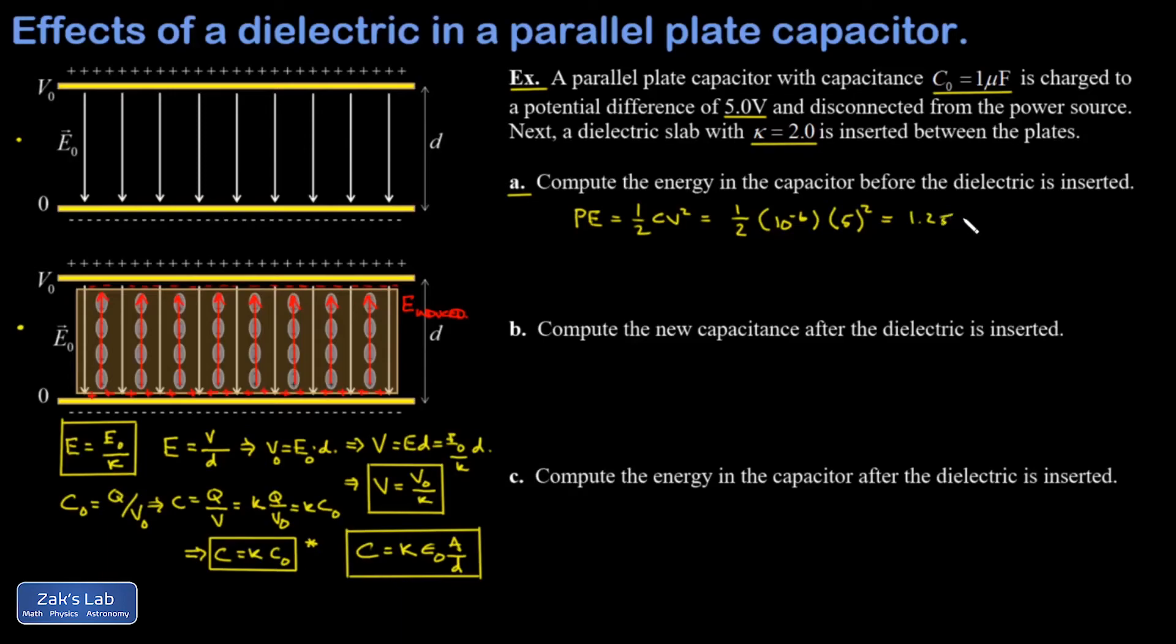In part b I'm asked for the new capacitance after the dielectric is inserted. Well I know the new capacitance is just going to be kappa times the original capacitance. That's twice the original capacitance, which was one microfarad, so now it's two microfarads.